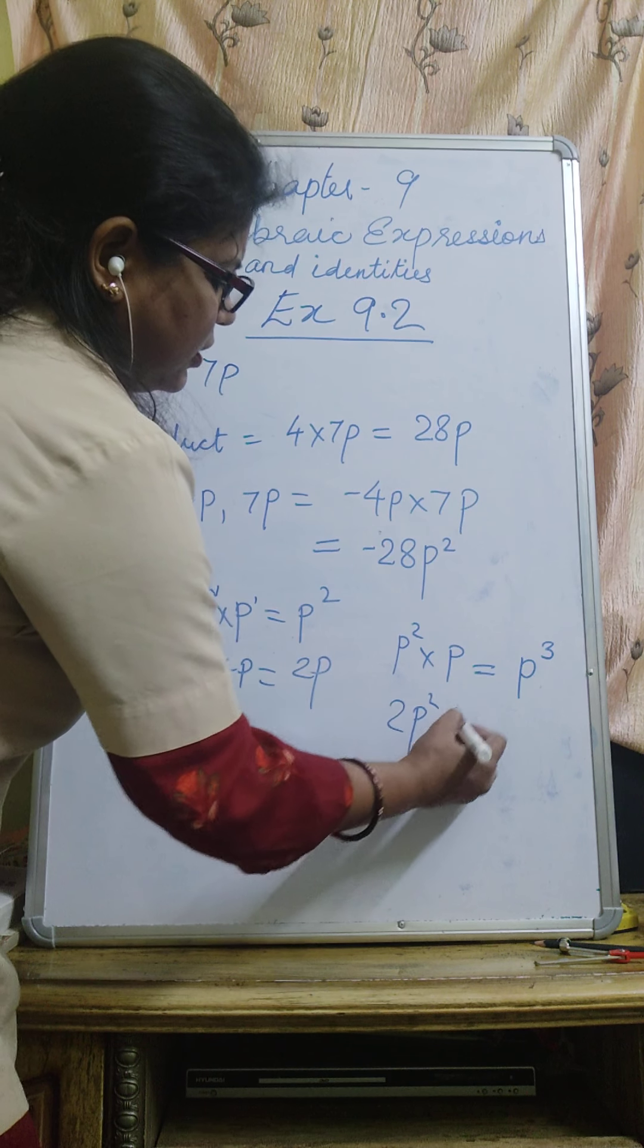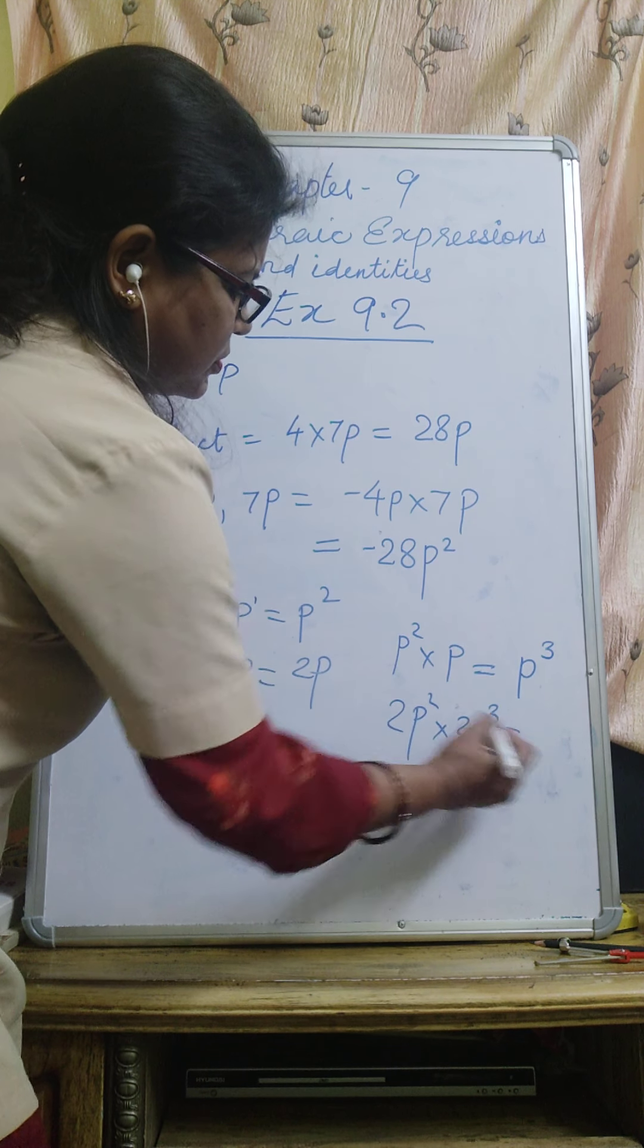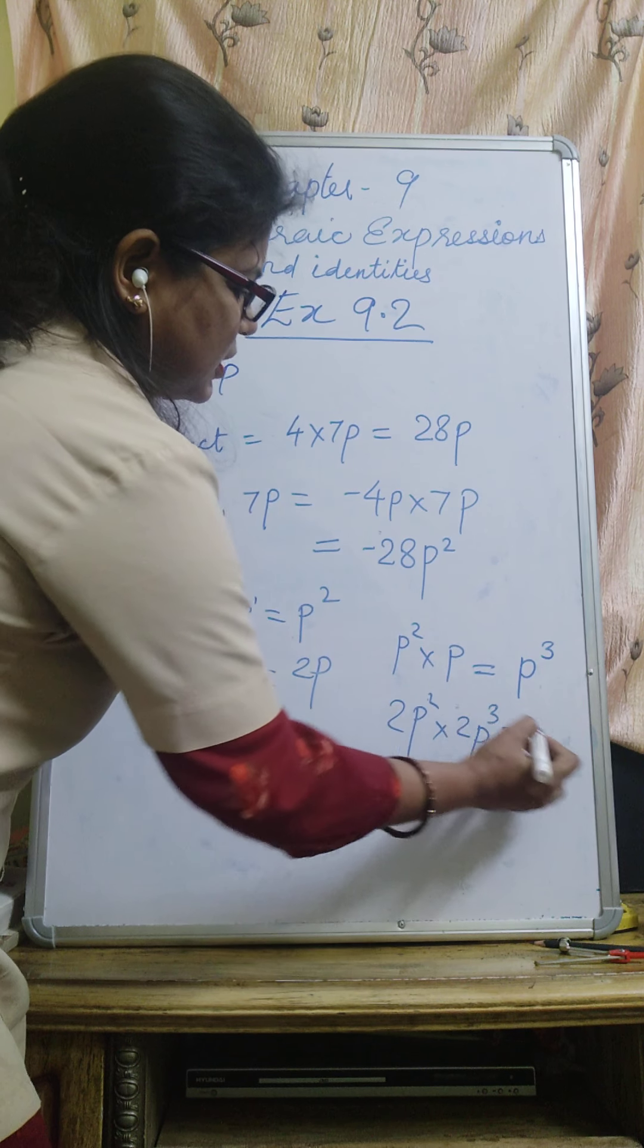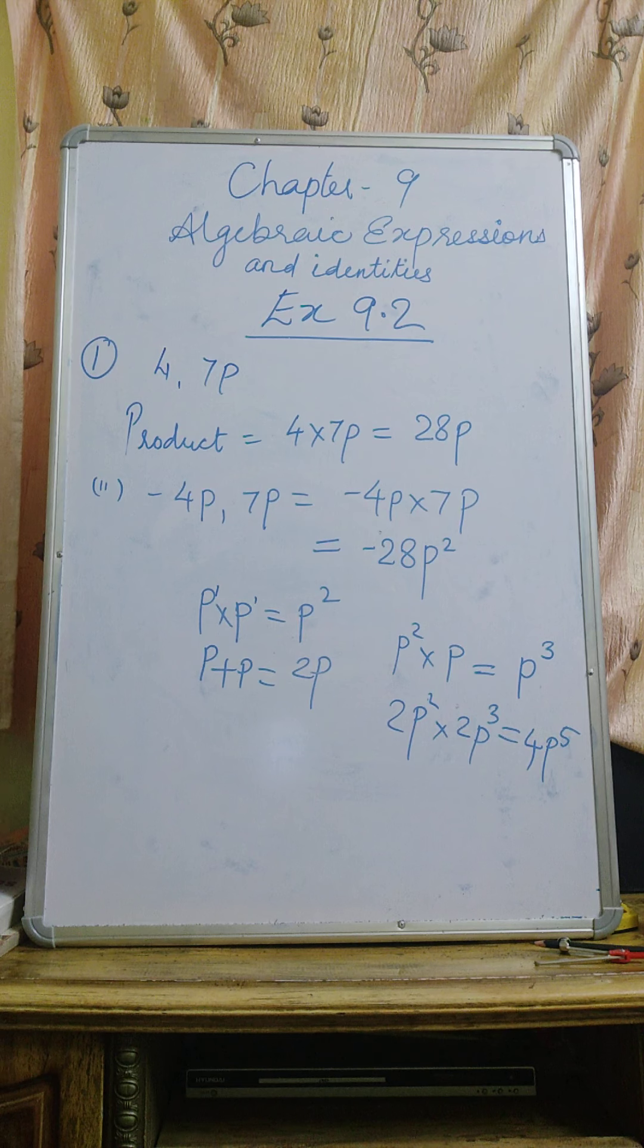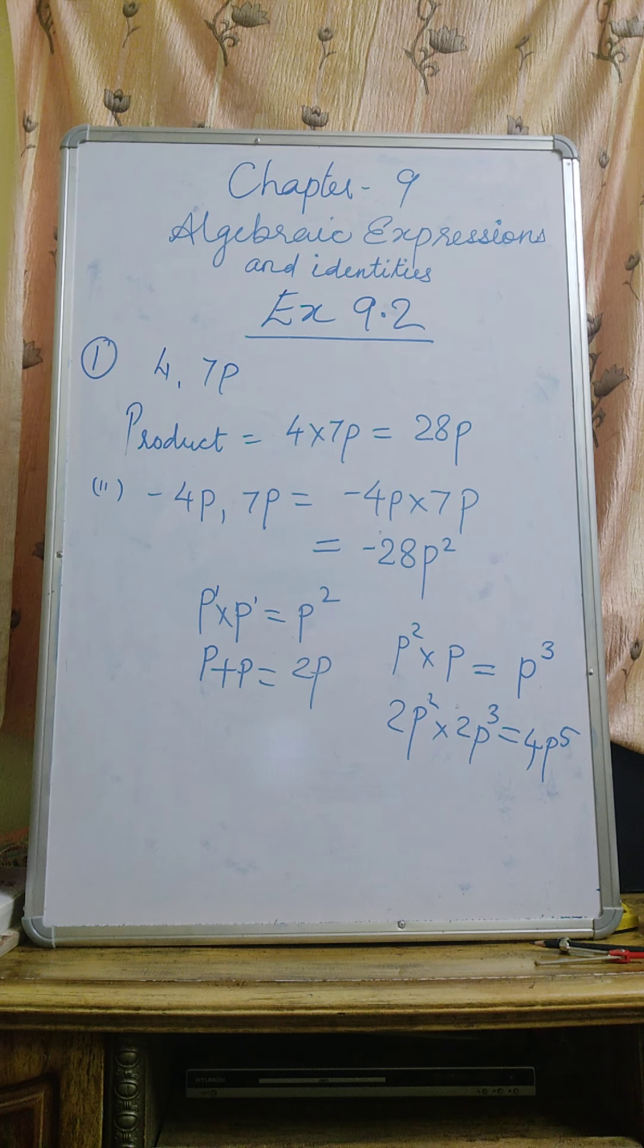Then 2P square into 2P cube. 2 times 2 is 4, and 2 plus 3 is 5, so we get 4P to the power 5. Like that, this is the product.